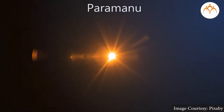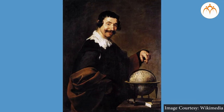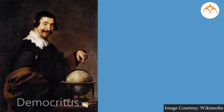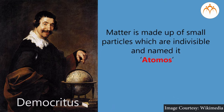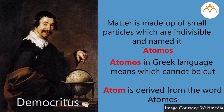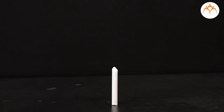Greek philosopher Democritus in the fifth century BC stated that matter is made up of small particles which are indivisible, and named them 'atomos'. In the Greek language, 'atomos' means 'which cannot be cut'. The word atom is derived from the word atomos.